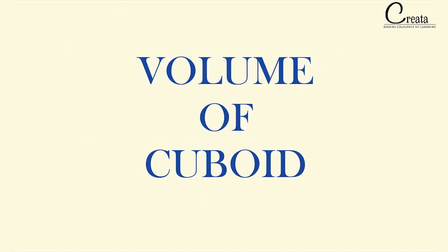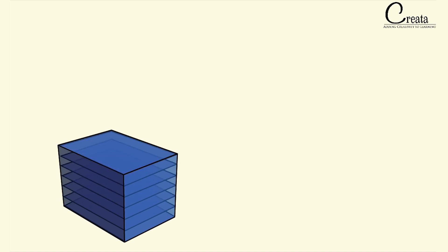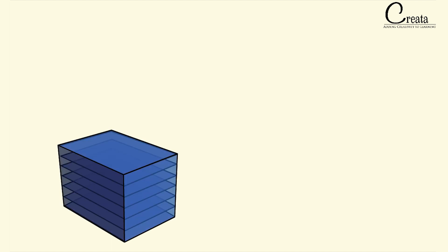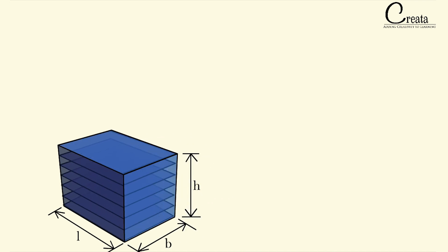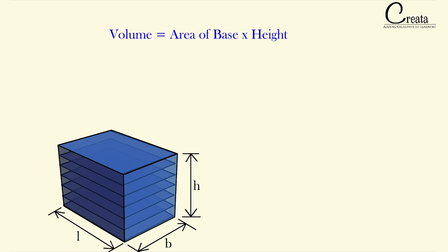Let's move to the volume of the cuboid. The cuboid is formed by adding rectangles — we take the base as a rectangle and keep adding congruent rectangles to form the 3D cuboid. The base of the cuboid is a rectangle with dimension L×B, added up to a height H. The volume equals the space all these rectangles occupy, which is the area of the base into height — that is, L×B×H.